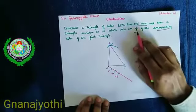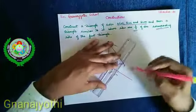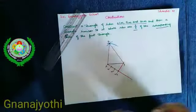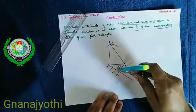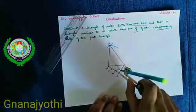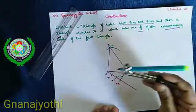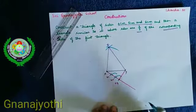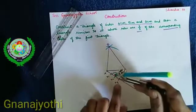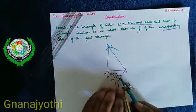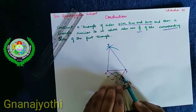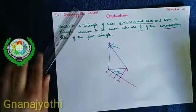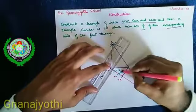The denominator is 3, so let us join this denominator point to Y. Now take the compass and draw a parallel line the same way without changing any measurement. Keep it on X2 and draw a curve. Now change the measurement, take the measurement of this and cut this curve. Now let us join the point.